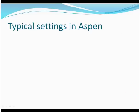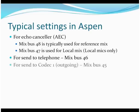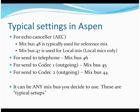The typical settings we advocate on the Aspen series are: for the Echo Canceler, use mix bus 48 for your reference mix and mix bus 47 for the local mix. In fact, in our conferencing units, mix bus 48 and 47 are the defaults for reference and local mix. For a send to the telephone, mix bus 46 is what you would send, then 45 to codec 1 and 44 to codec 2. These are your outgoing signals. It can be any mix bus — you are not trapped in these settings — but this is the default we ship the unit in. You can set up whatever standard you like for your installation.